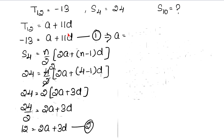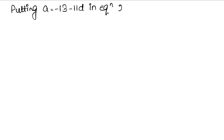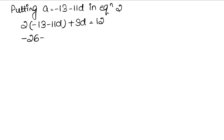Yeh wala 2 neeche aa gaya: 24 upon 2 = 2a + 3d, toh 12 = 2a + 3d — yeh aai 2nd equation. First equation mein se a ki value nikali: a = minus 13 minus 11d. Ab a ki value second equation mein put karenge: putting a = minus 13 minus 11d in equation second, jo thi 2a + 3d = 12.